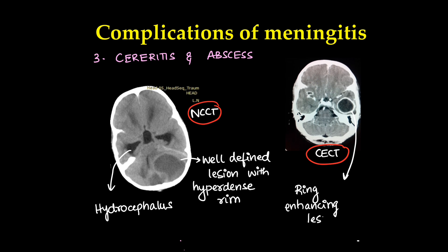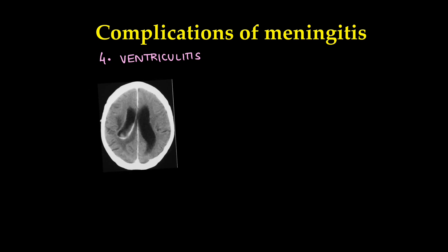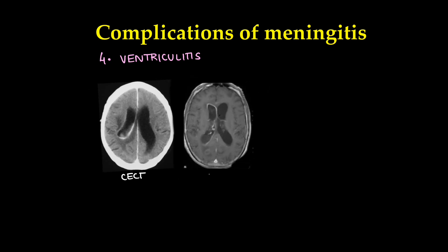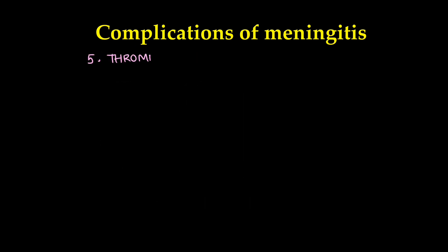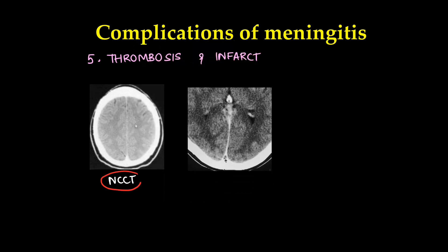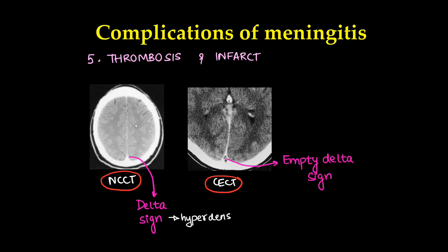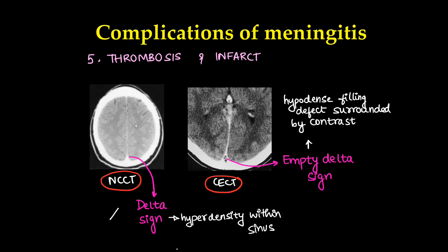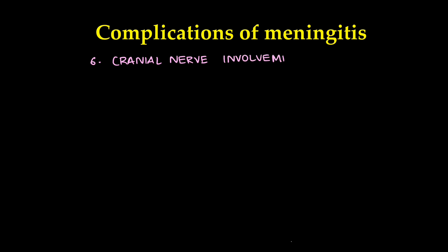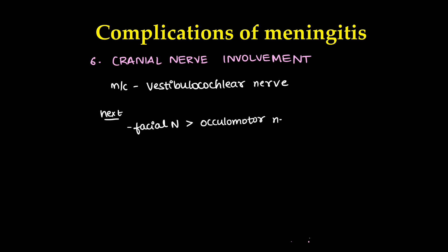On CECT, a cerebral abscess appears as a peripherally or ring-enhancing lesion with leptomeningeal enhancement. Ventriculitis — inflammation of the ependymal layer — can be seen on contrast-enhanced CT or MRI as ependymal enhancement. Thrombotic complications and infarcts can also occur: on non-contrast CT, a delta sign (hyperdensity within the sinus) can be seen in the superior sagittal sinus; on CECT, an empty delta sign — hypodense filling defect surrounded by contrast-filled vessel. Cranial nerve involvement, most commonly the vestibulocochlear nerve, can be found.